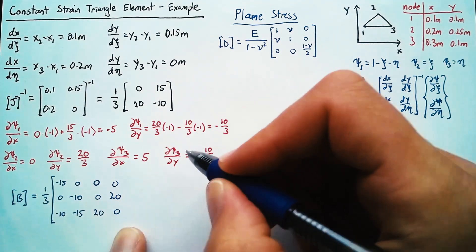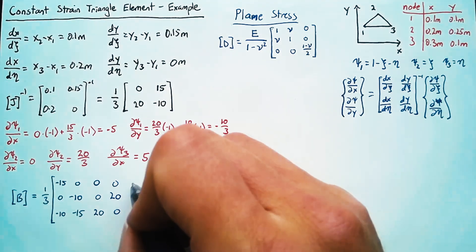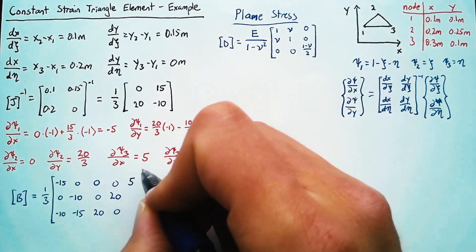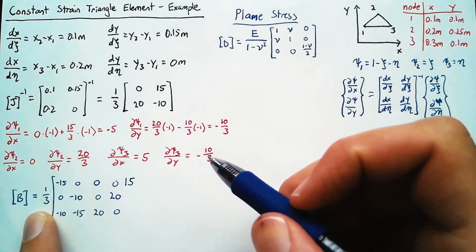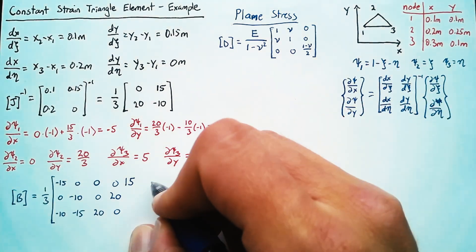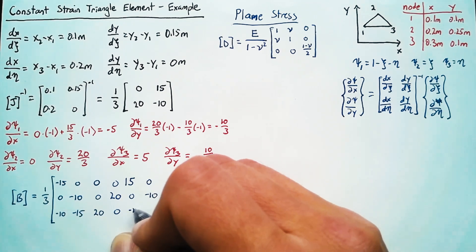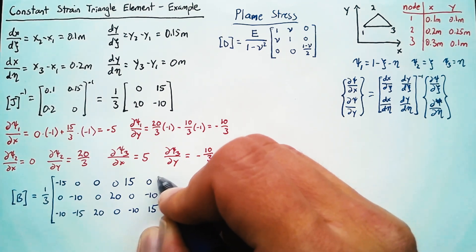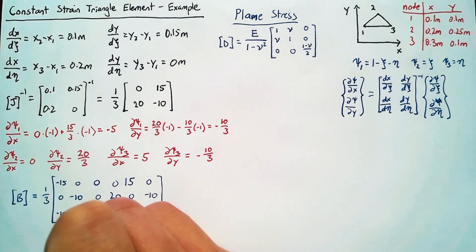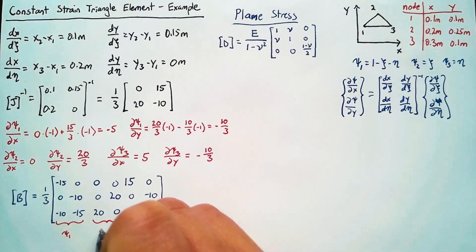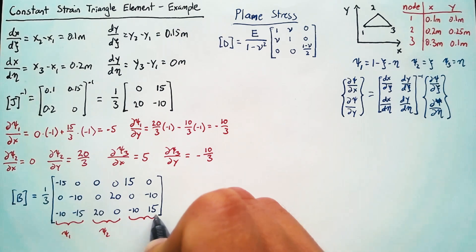And then following the same pattern, our d psi dx for psi 3 is 5. Sorry, that should be 15 since we have this 3 out here. And then 0, 0, negative 10, negative 10, 15. Where again, this chunk comes from psi 1, this from psi 2, and this from psi 3.